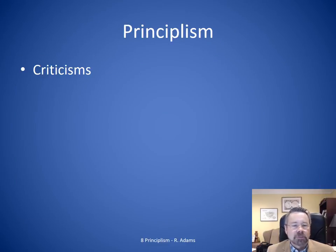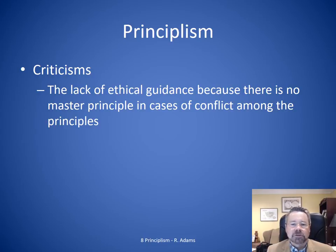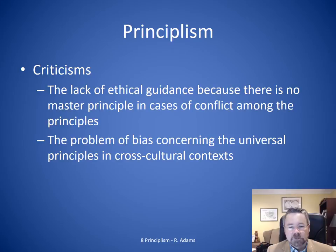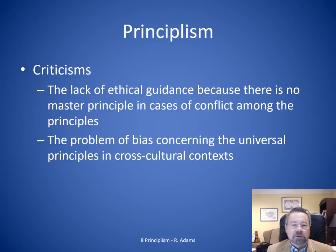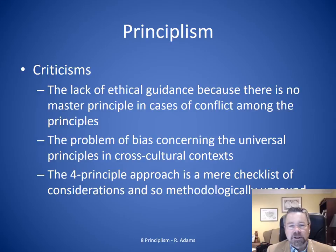Now let's look further at principalism and the criticism of principalism. I am a proponent that there are a lot of criticisms of this approach — that it overemphasizes autonomy considerably. It gives us really no ethical guidance as to how we should be resolving cases; it merely gives us four different principles and we figure it out from there. It certainly allows for the bias of the community, of the decision maker, to come in, because there's no priority among those four principles. They're all just kind of floating in equilibrium. Some critics suggest that it's merely a checklist — we look at this, we look at that, we look at something else — and it really doesn't give you a methodology for how you go about making decisions.